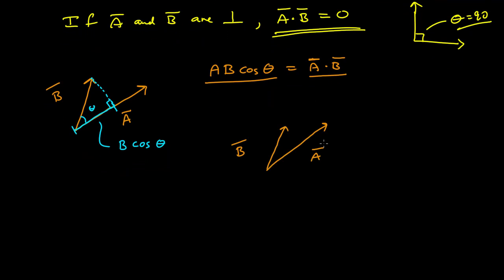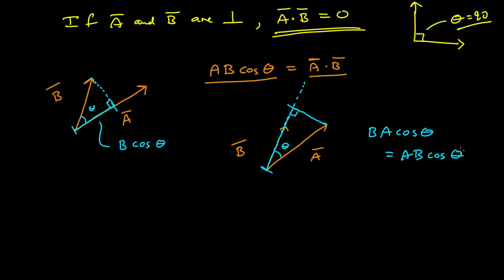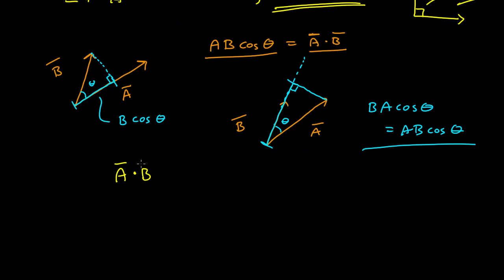It goes the other way too. If I extend the line out of b and want the projection of a on b, I draw a line from the tip of a to the line containing b such that it makes a right angle. b times the projection of a on b equals b times a cosine theta — that's just ab cosine theta. You can look at it either way: the projection of a on b times the magnitude of b, or the projection of b on a times the magnitude of a. The dot product is commutative.